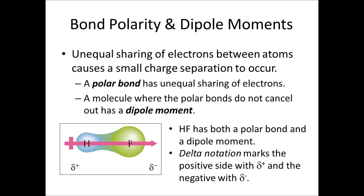Every time there's a polar bond you have a dipole that you could draw parallel to that bond. The delta notation means partial positive or partial negative charge. There can be multiple dipole moments inside the same molecule, and you could average those out to get a total overall dipole moment for the molecule, which may or may not be the same direction as any individual bond dipole.